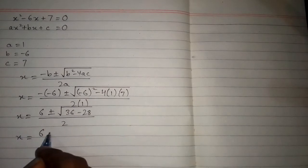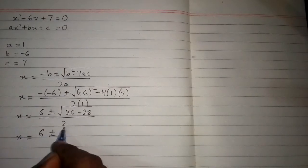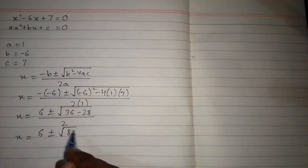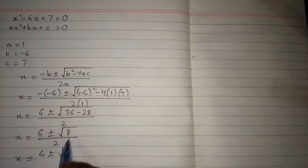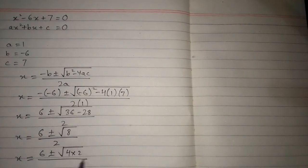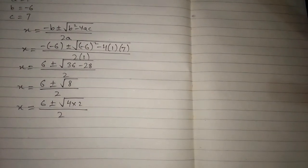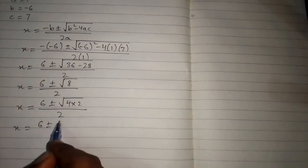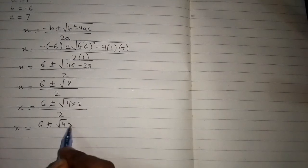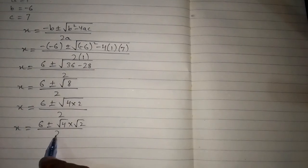Now we have x is equal to 6 plus or minus the square root of 36 minus 28 — which is 8 — upon 2. Then x is equal to 6 plus or minus: we can write 8 as 4 times 2, upon 2. This square root of 4 times 2 can be written as the square root of 4 times the square root of 2, upon 2.